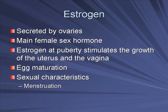Finally, estrogen at puberty drives the development of secondary sexual characteristics common to females, like menstruation, widening of hips, larger breasts, and things like that.